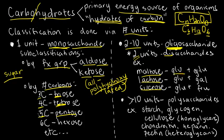For maltose, glucose is partnered with another molecule of glucose. Lactose has glucose attached with galactose. Sucrose has glucose with one molecule of fructose. The only thing you need to memorize is the partner sugar to complete each disaccharide.